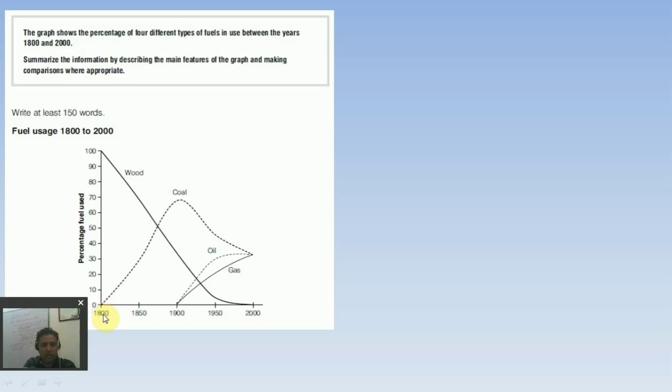Beyond 1950 it started decreasing slowly. With the start of 19th century, a new fuel which is coal, the use of coal started. This fuel consumption increased and simultaneously there was decrease in the usage of wood. By the start of 20th century, year 1900, two new fuels were introduced: oil and gas.